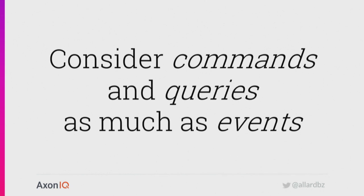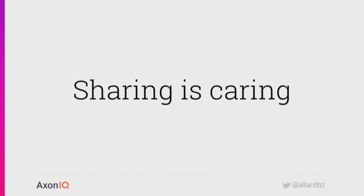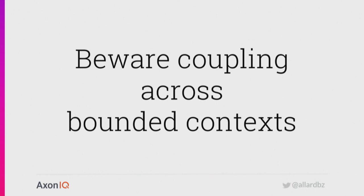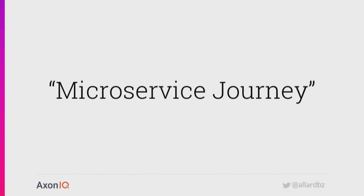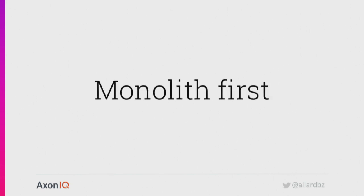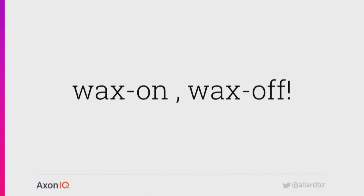In closing, I heavily recommend you consider commands and queries as much as events — however you implement them is up to you. But don't see everything as an event, even when you do event-driven microservices. Sharing is caring — as soon as you share an API, you own it, you need to care for it. Any change you make, you will break something or maybe even someone. Beware of coupling across bounded contexts — a tightly coupled system where components have different meanings on attributes is the far worse thing you can have. A change will become disastrous. Microservices are a journey — start with a monolith. And most importantly, discipline. Wax on, wax off.